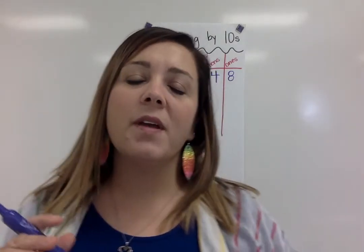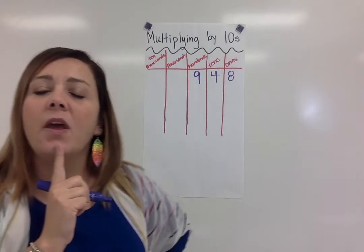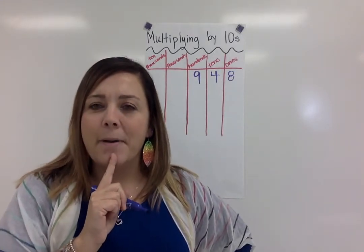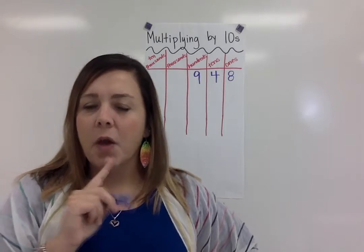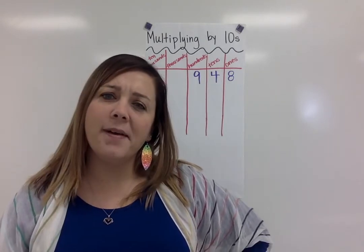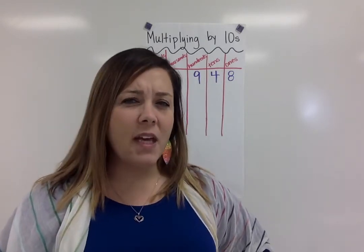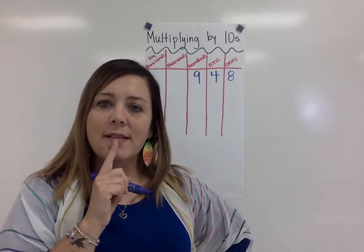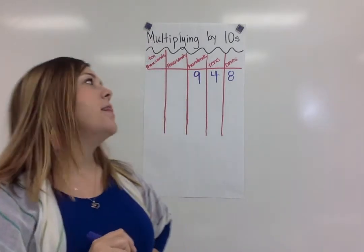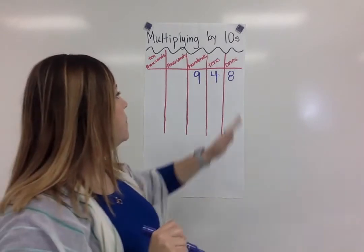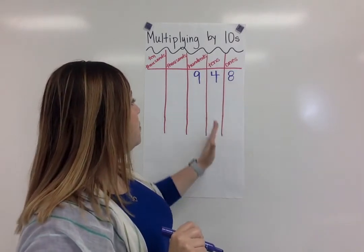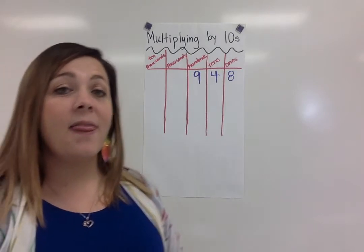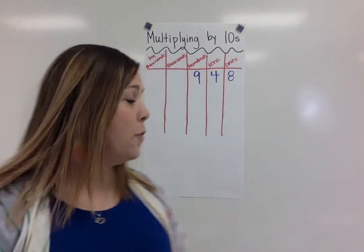So let's look at this number. If I were to multiply this number by 100, what would happen to the value of each of those digits? Well, we know that in a place value chart each place is 10 times greater than the place just before it.